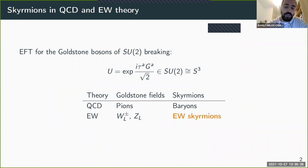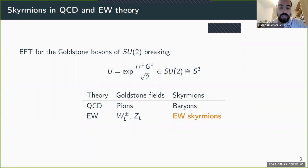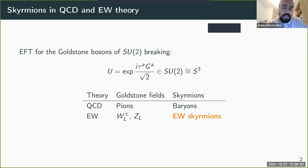The pions can be viewed as pseudo-Goldstone bosons. You can collect them into this matrix U, which is their exponential, and construct the effective chiral Lagrangian as a function of U. What people found back in the 80s is that in this theory you have non-trivial solutions which are topologically protected and share many properties with baryons — people were very excited because you get baryons for free just from the pion fields.